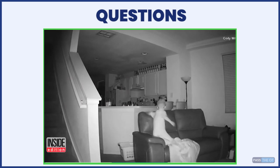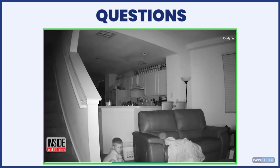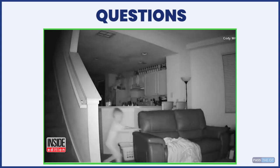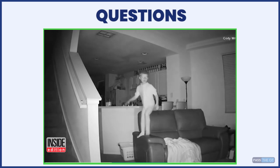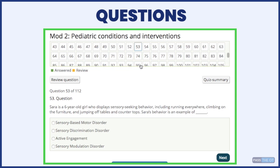Sarah is a six-year-old girl who displays sensory-seeking behavior, including running everywhere, climbing on furniture, and jumping off tables and countertops. What is Sarah's behavior an example of? The answer is sensory modulation disorder. Sensory-seeking is a sign that this child is under-responsive to sensory stimuli and is craving more sensory input.